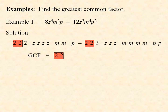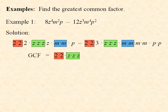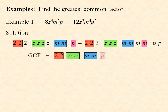As far as the z's are concerned, the first term contains four of them, but the second only contains three, so we can only use three z's in the greatest common factor. As far as the m's are concerned, the first term contains two m's and the second contains more, so we can only use two m's. The first term contains only one p, and the second term contains two, so we can use one p. We are taking the greatest number of each factor that belongs to all the terms, giving us 4z³m²p.